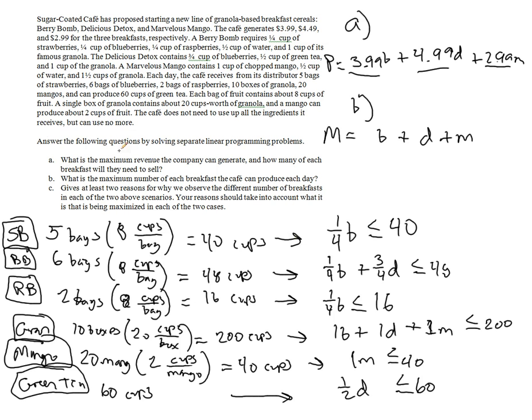Now what are our constraints? Well, the constraints are obviously on the ingredients, because the ingredients will make up the meals. We don't actually have any constraints on the meals themselves.